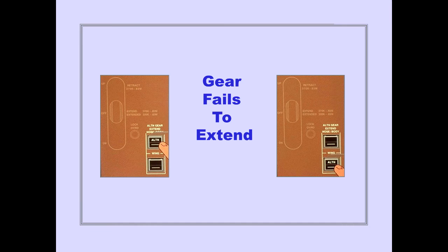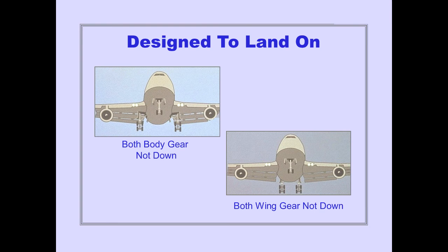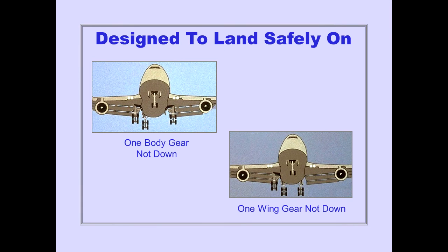If the affected gear fails to extend, the airplane is designed to land safely with both body gear not down, or with both wing gear not down, or with one body gear not down, or one wing gear not down.